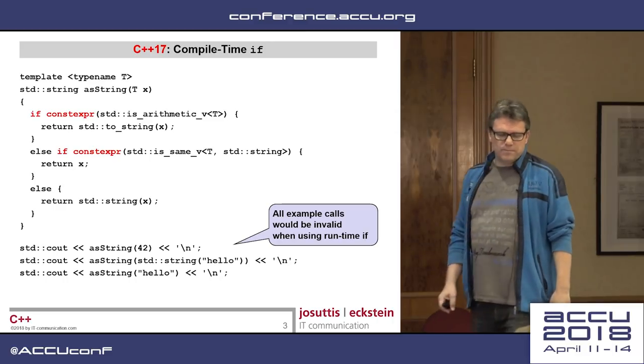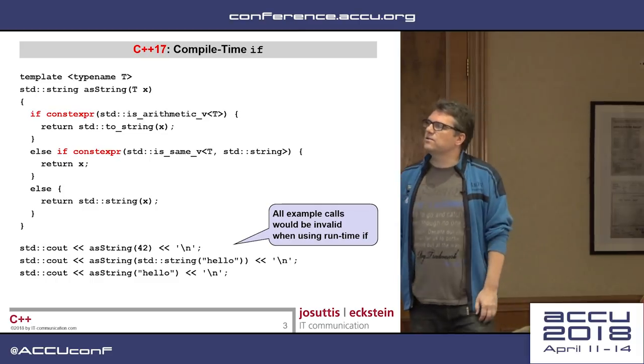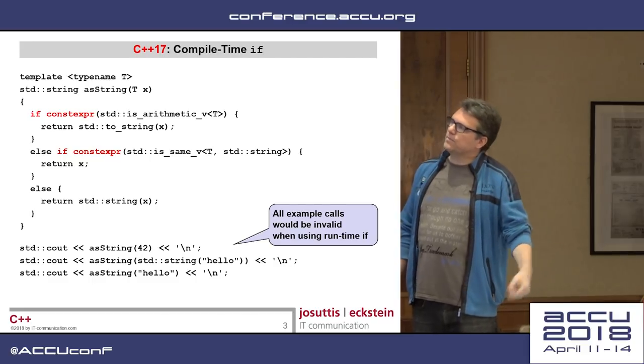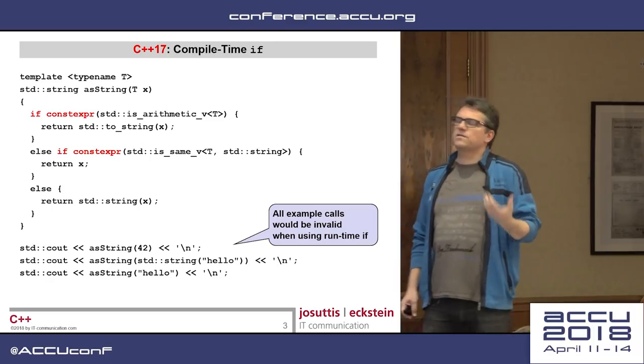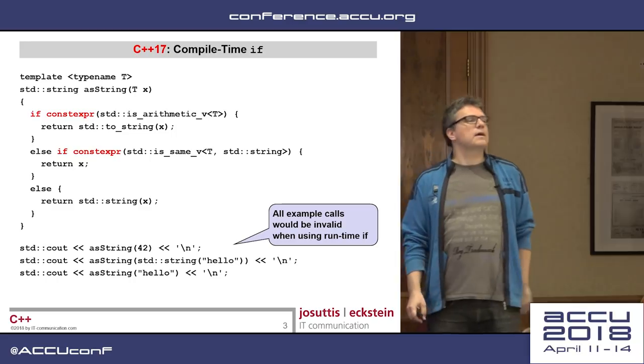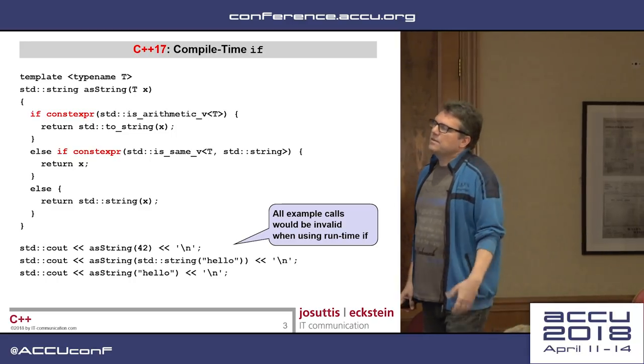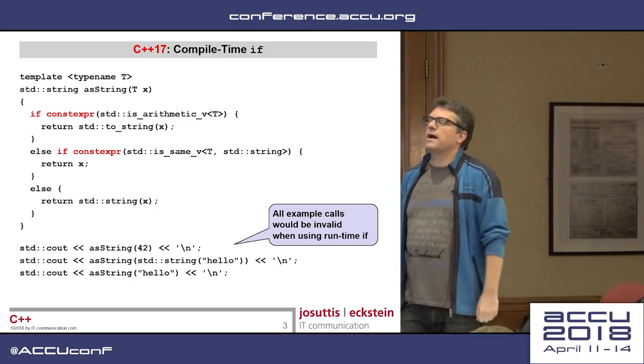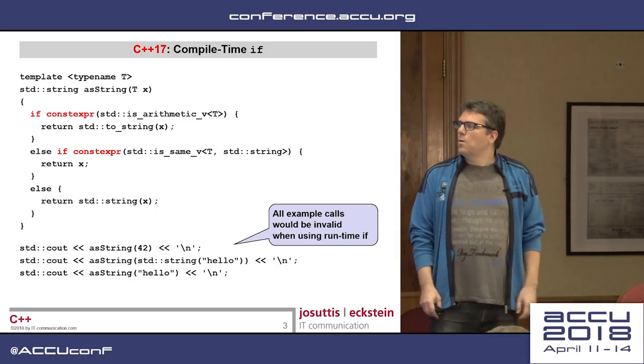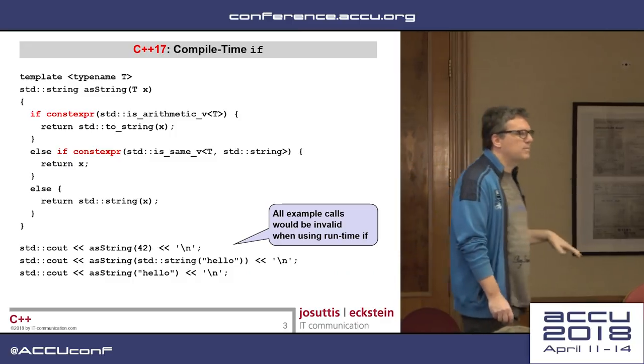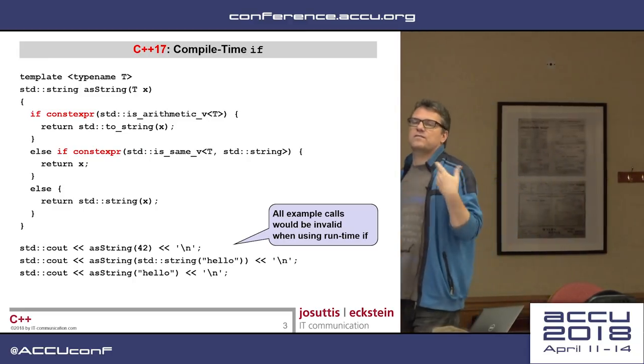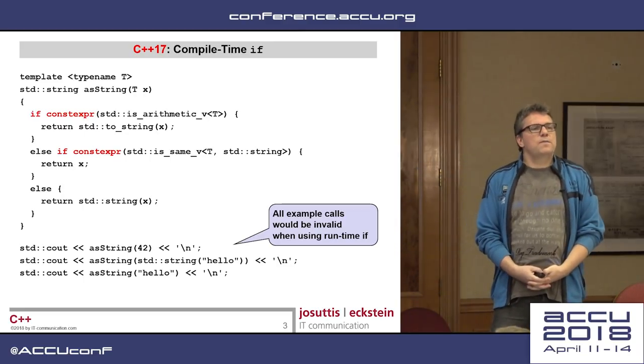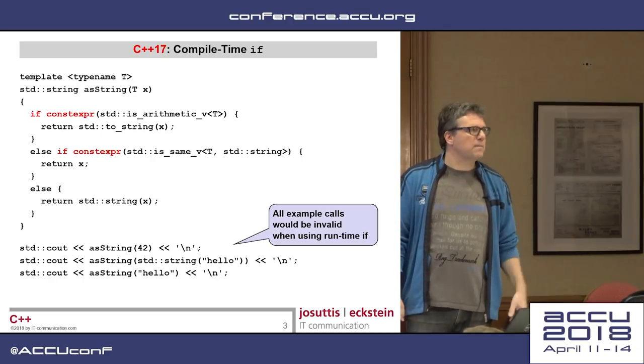So in the first case, I call the function std to string, which is supported by integral and arithmetic types only. So this code in the first case would not compile for any type which is not integral or floating point. And in the second case, I just take the string as it is. And in the third case, I use a constructor. This constructor would not compile if my argument is an integral value. So whatever I pass, only some of this code is compilable. And therefore, this compile time if is necessary because a runtime if would never compile this code. So this will help me to provide this in one function instead of doing some tricky template magic here.